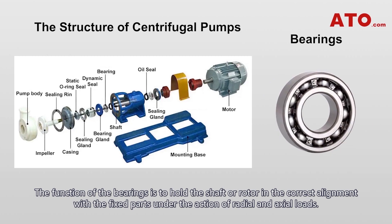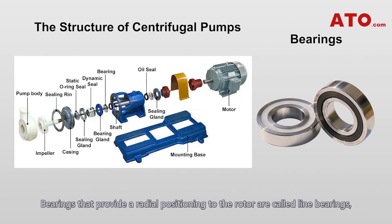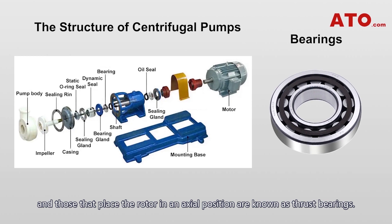The function of the bearings is to hold the shaft of the rotor in the correct alignment with the fixed part under the action of radial and axial loads. Bearings that provide a radial positioning to the rotor are called line bearings, and those that place the rotor in an axial position are known as thrust bearings.